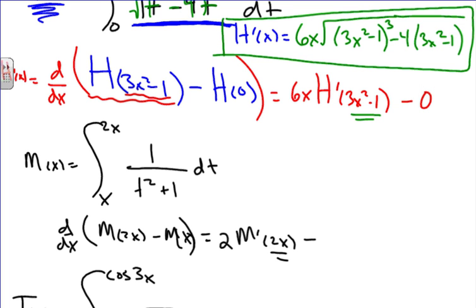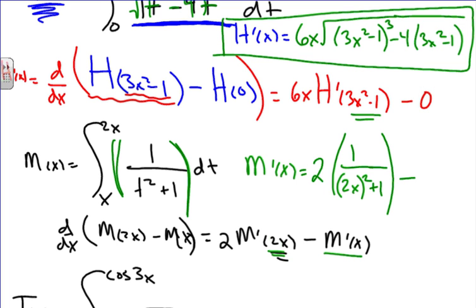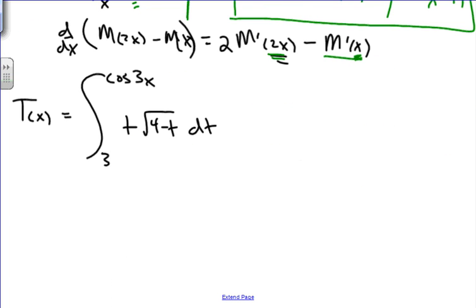The derivative of m of x is m prime of x. So m prime of x equals 2 times m prime composed of 2x, which equals the integrand evaluated at 2x: 1 over (2x) squared plus 1. Then we subtract m prime of x, which equals the integrand evaluated at x: 1 over x squared plus 1. And there is our derivative.